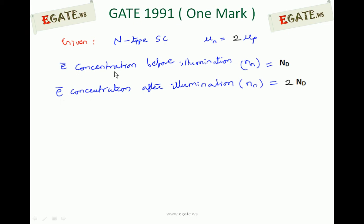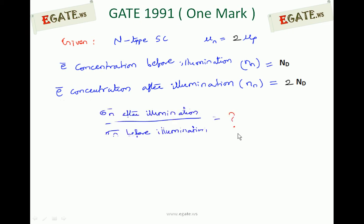Electron concentration before illumination is Nd. After illumination it is 2 times Nd. We need to calculate the ratio of conductivity of the n-type semiconductor after illumination to before illumination.